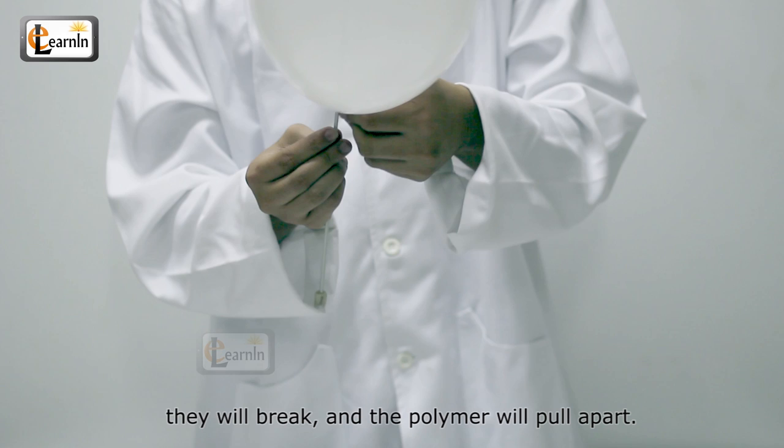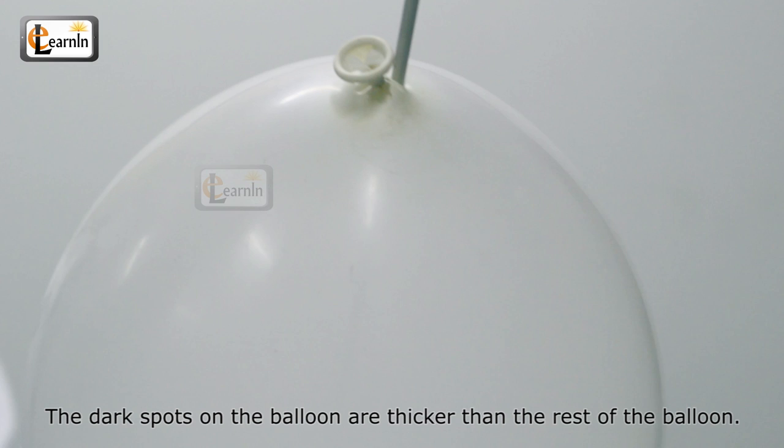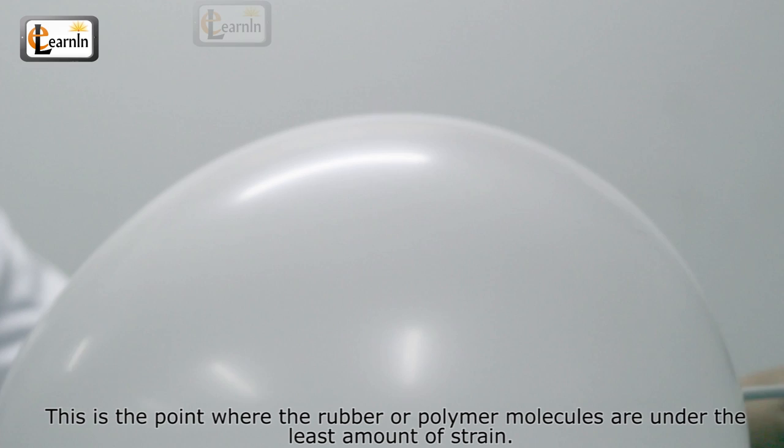The dark spots on the balloon are thicker than the rest of the balloon. This is the point where the rubber or polymer molecules are under the least amount of strain.